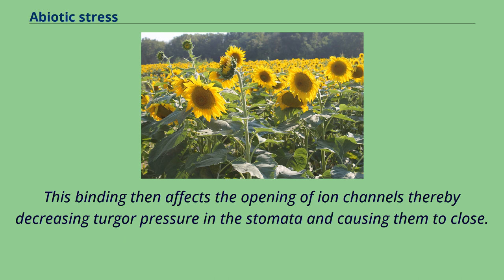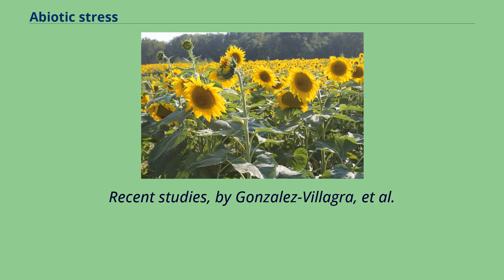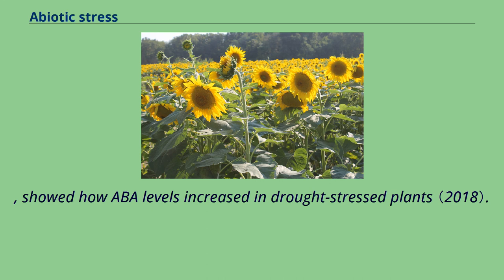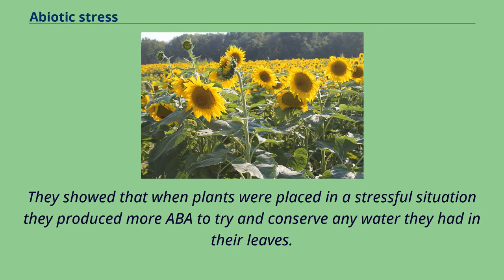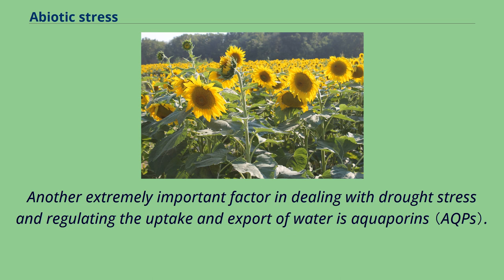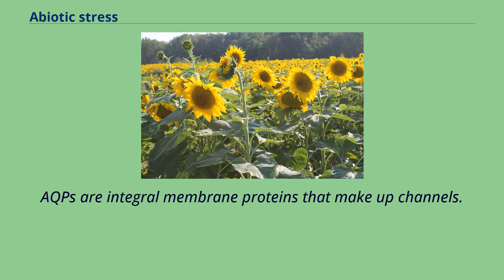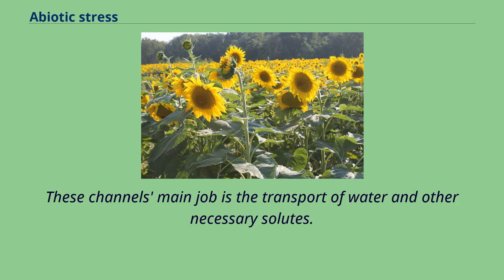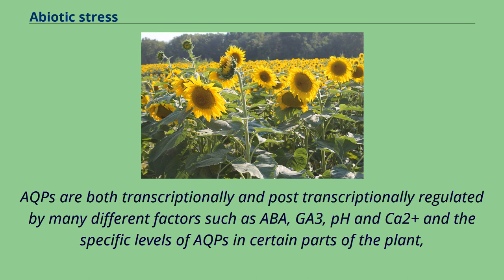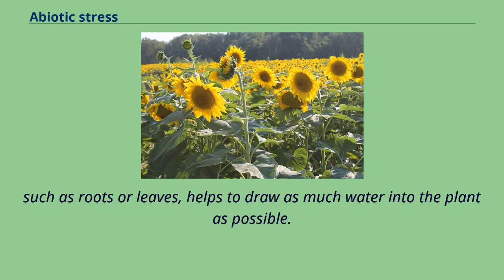Recent studies by Gonzalez-Villagra et al. showed how ABA levels increased in drought-stressed plants — when plants were placed in a stressful situation, they produced more ABA to try and conserve any water they had in their leaves. Another extremely important factor in dealing with drought stress is aquaporins (AQPs), integral membrane proteins that make up channels for the transport of water and other necessary solutes. AQPs are both transcriptionally and post-transcriptionally regulated by many factors such as ABA, GA3, pH, and CO₂, and the specific levels of AQPs in certain parts of the plant such as roots or leaves helps draw as much water into the plant as possible. By understanding both the mechanism of AQPs and the hormone ABA, scientists will be better able to produce drought-resistant plants in the future.